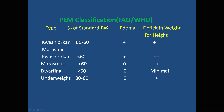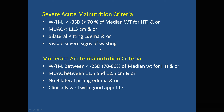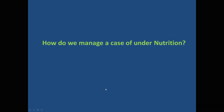The WHO classification of protein-energy malnutrition uses percentage of body weight relative to reference and presence of edema. This identifies kwashiorkor, marasmus, marasmic kwashiorkor, and underweight. In clinical management, we use Severe Acute Malnutrition (SAM) and Moderate Acute Malnutrition (MAM) criteria based on four parameters: weight for height or weight for length, mid-upper arm circumference, presence of edema, and visible signs of wasting. In SAM these signs are present; in MAM they are less obvious and the child is clinically well with good appetite.